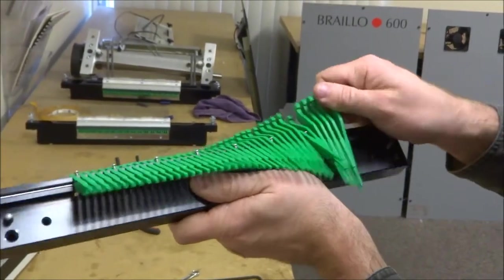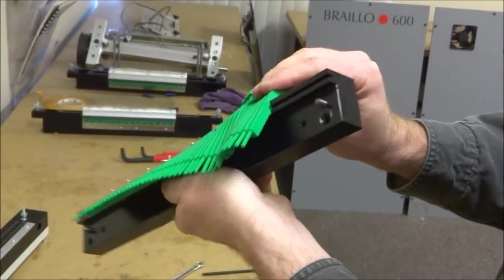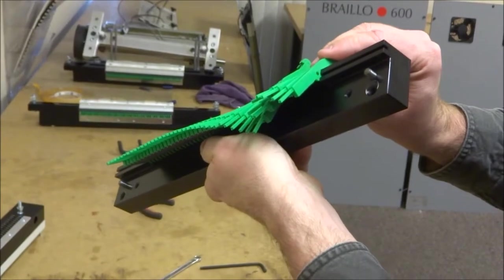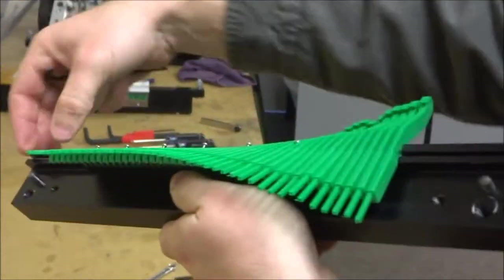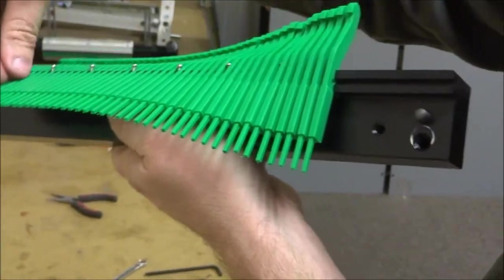With a small Allen wrench, you can see that now this pivot arm will come loose. The further you slide this bar out, the more of these will come out with it.